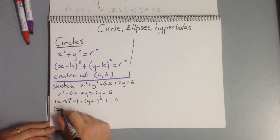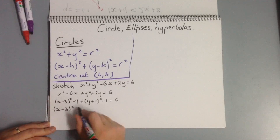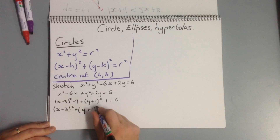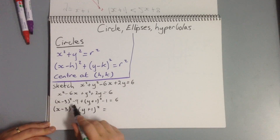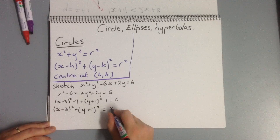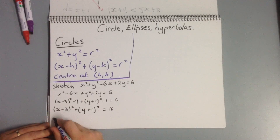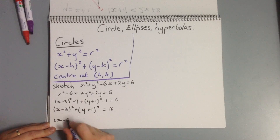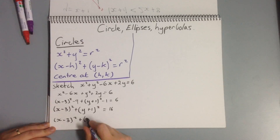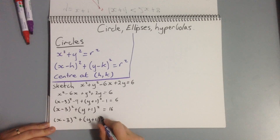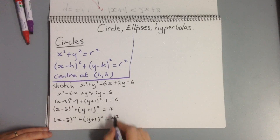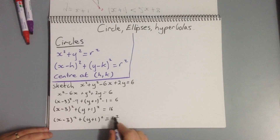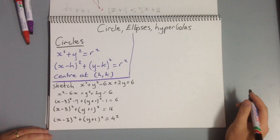We need to move these across, so we get x minus 3 squared plus y plus 1 squared equals 16, which we can see is x minus 3 squared plus y plus 1 squared equals 4 squared. We don't need to write 16 as 4 squared, but it makes it slightly easier to identify our radius.